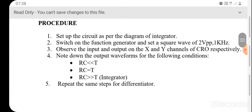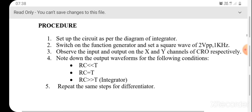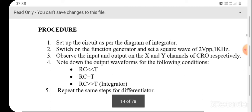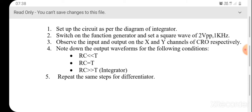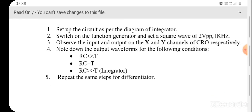The procedure is: set up the circuit as per the diagram of the integrator on the breadboard. Connect the input voltage to the function generator, connect the capacitor to the resistor. The output is taken across the capacitor. Switch on the function generator and set a square wave of 10 volt peak to peak and 1 kHz. Observe the input and output on the X and Y channels of the oscilloscope respectively. Note the output waveforms for the three conditions: RC very very less than T, RC equal to T, and RC greater than or equal to T.